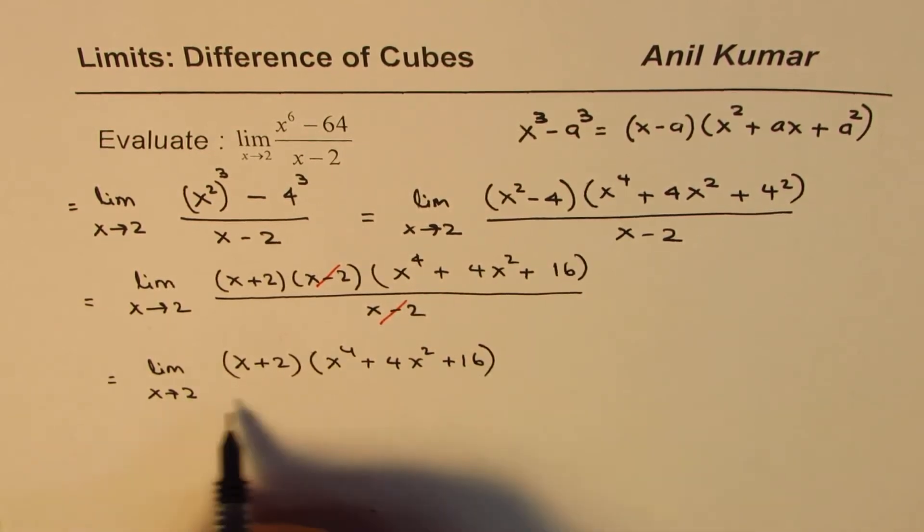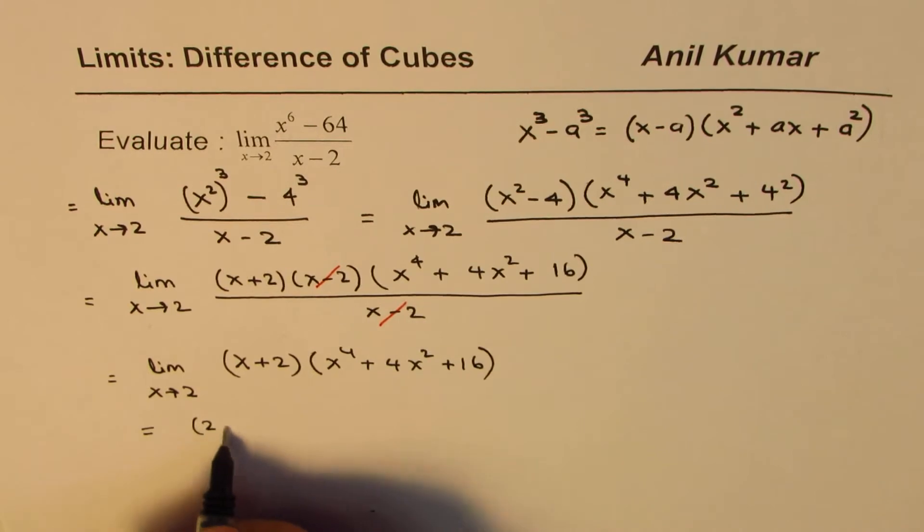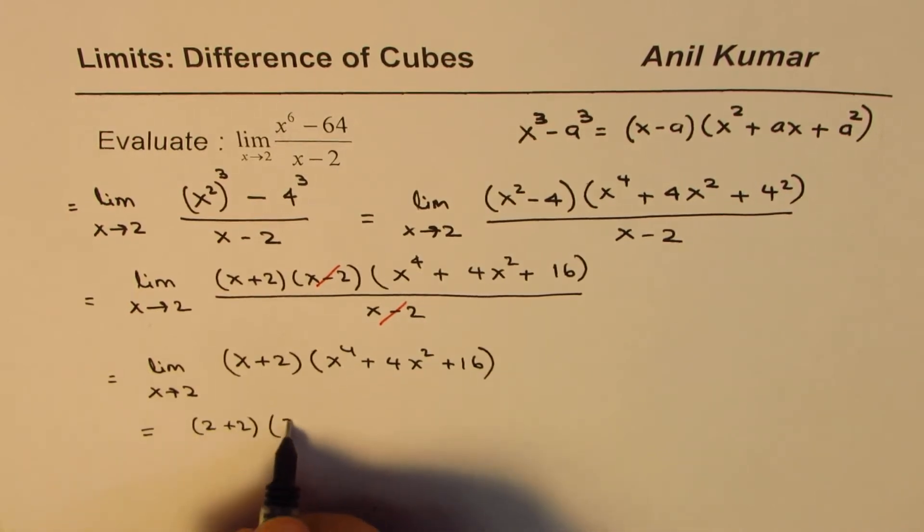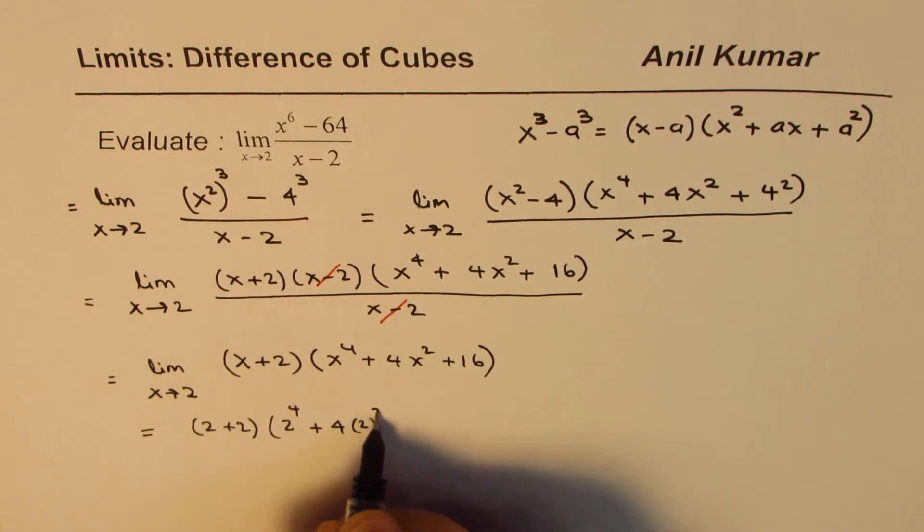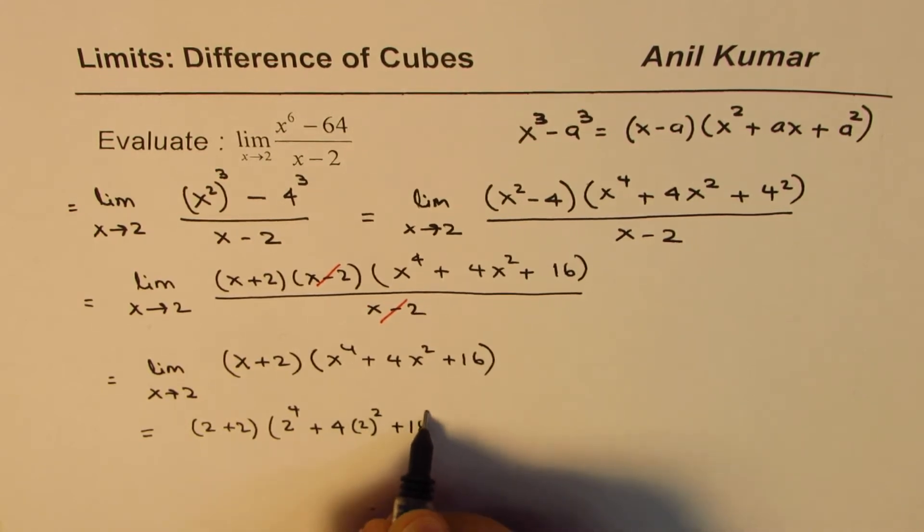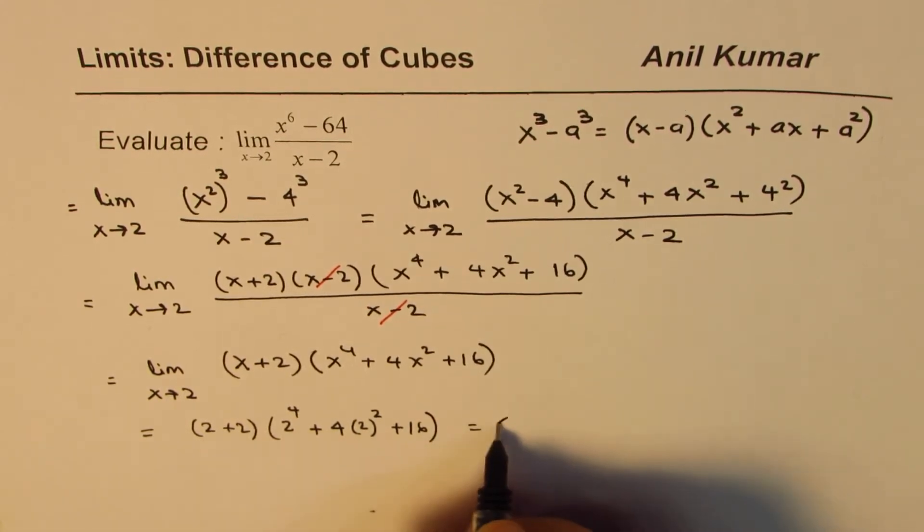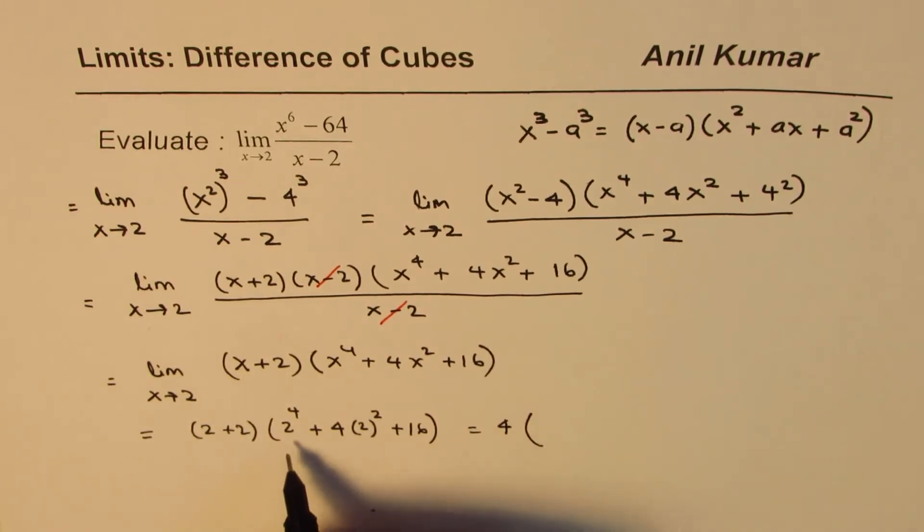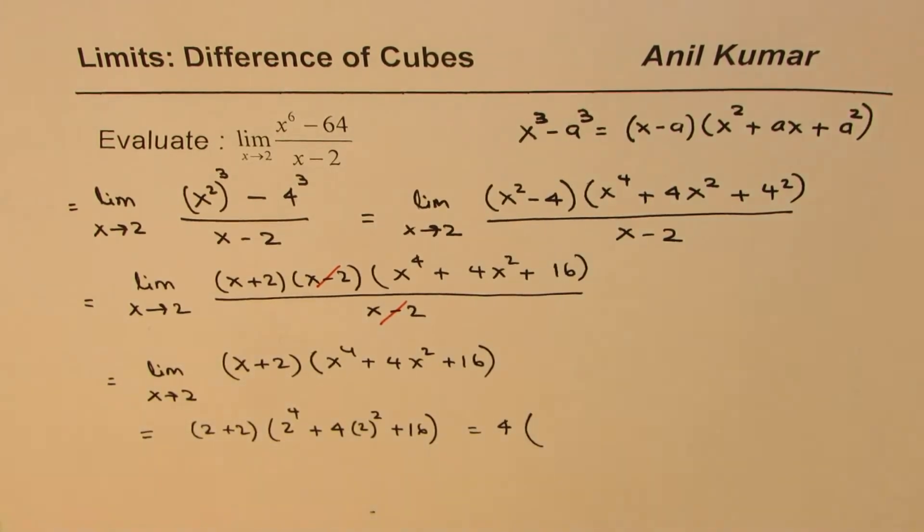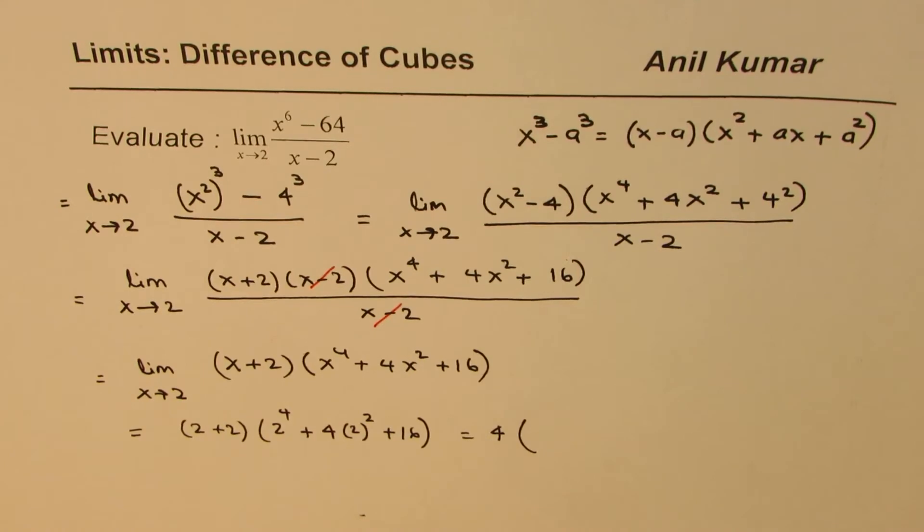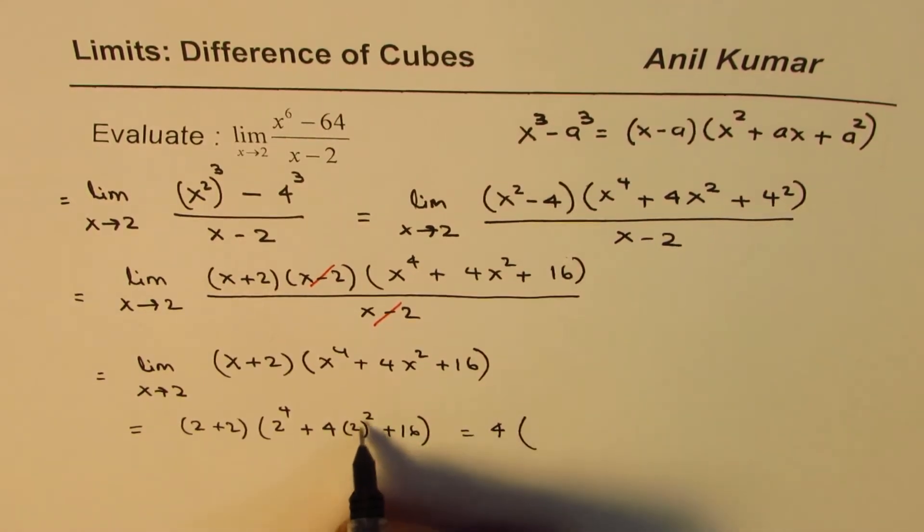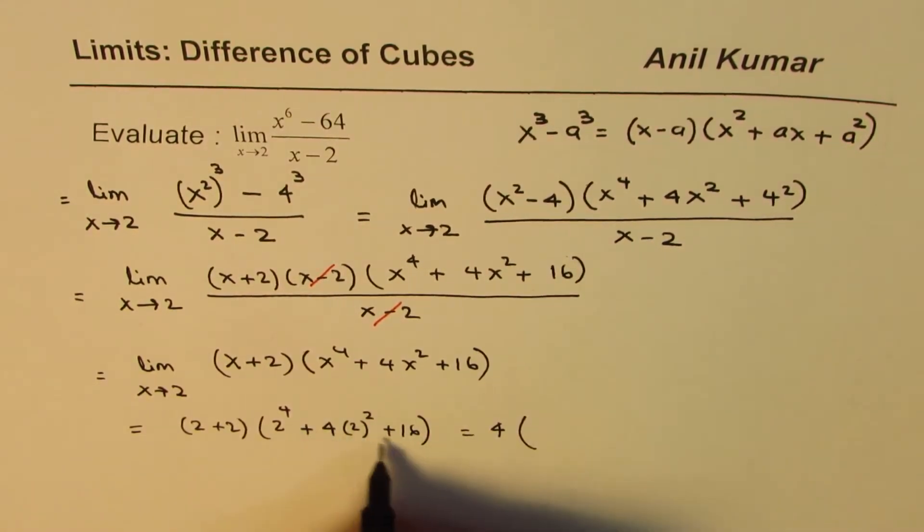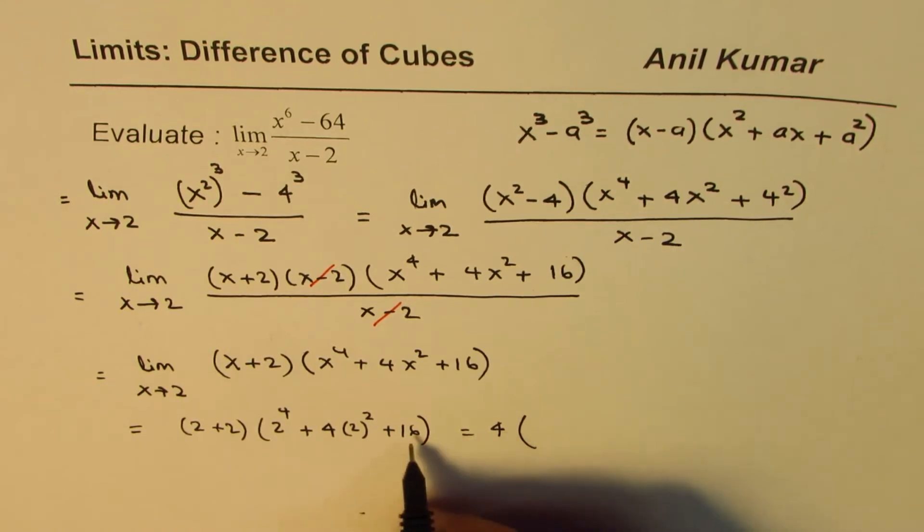Now we can substitute 2 in the given equation. So we get 2 plus 2 times 2 to the power of 4 plus 4 times 2 square plus 16, which is 4. Now 2 to the power of 4 is 16. And this is also 4 times 4, 16, so it is 3 times 16, or 48.